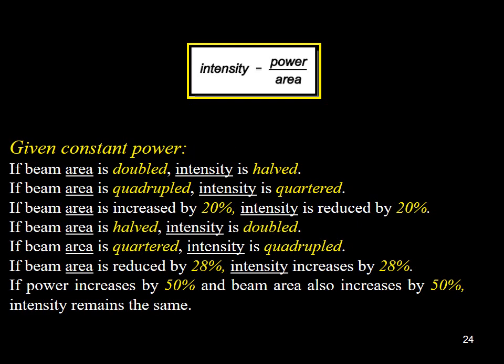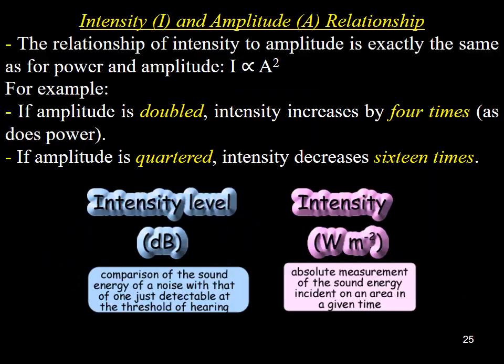This slide, on the other hand, depicts the inverse relationship between the intensity of the sound wave and the area. Based on the previous explanation of amplitude and intensity, as well as the clarification of power in ultrasound physics, here is an illustration of the relationship between intensity and amplitude, which is identical to the relationship between power and amplitude. In physics, the intensity of the wave is directly proportional to the square of its amplitude. For example, doubling the amplitude results in a four-fold increase in intensity. And when the amplitude is quartered, the intensity is reduced 16 times.